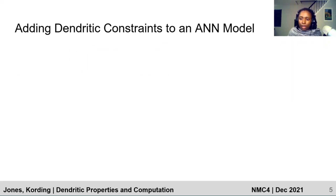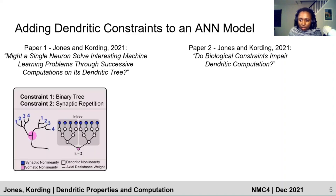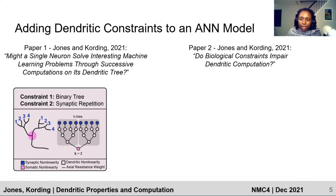So now I'll talk about the constraints we added. This work spans two papers. We take a fully connected ANN with ReLU activation functions first. We acknowledge that the dendritic trees are binary branching trees, and we impose a strict form of that binary branching structure as a constraint. This constraint is the basis for arguing that our model is a neuron-like compartment model. Secondly, individual presynaptic neurons have been observed to synapse multiple times onto the dendritic tree of a single postsynaptic neuron, introducing synaptic repetition. We impose a strict form of that synaptic repetition into our model as well.